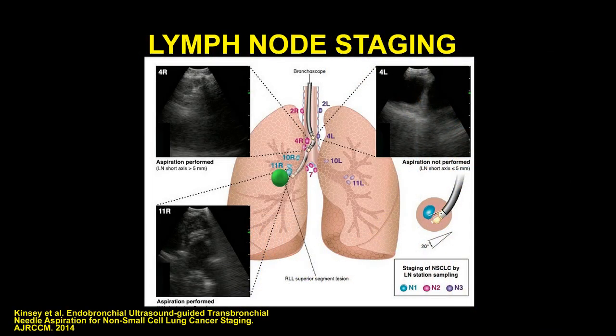The lymph node stations should be surveyed and sampled in a staging fashion in the evaluation of a known primary lung nodule or mass. In this image, the primary lesion is labeled in green and is located in the superior segment of the right lower lobe. Surveillance and sampling begin at the N3 nodes, which include contralateral mediastinal or hilar as well as any supraclavicular nodes, then proceeding to N2 lymph nodes, which include ipsilateral mediastinal or subcarinal nodes, and lastly the N1 lymph nodes, which include ipsilateral peribronchial or hilar lymph nodes. This is done to avoid contamination and false upstaging.